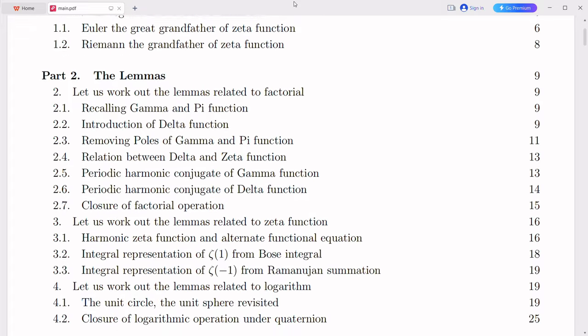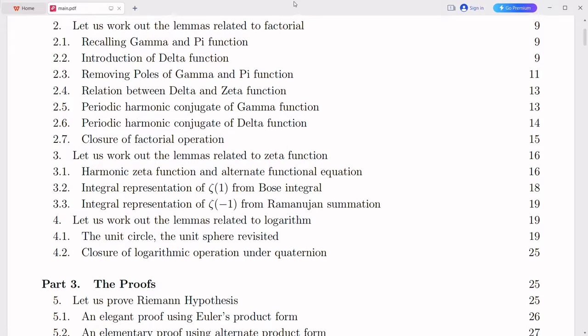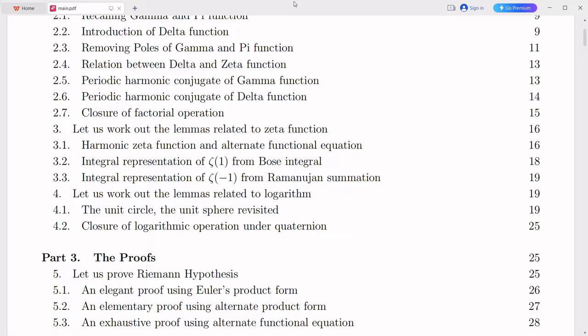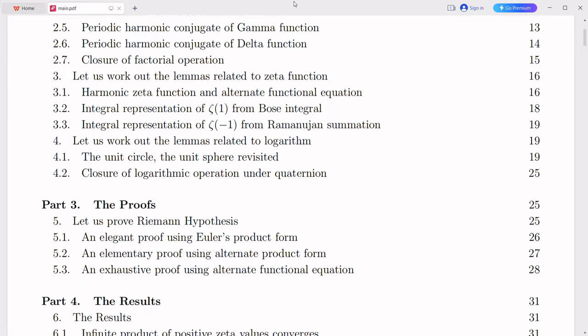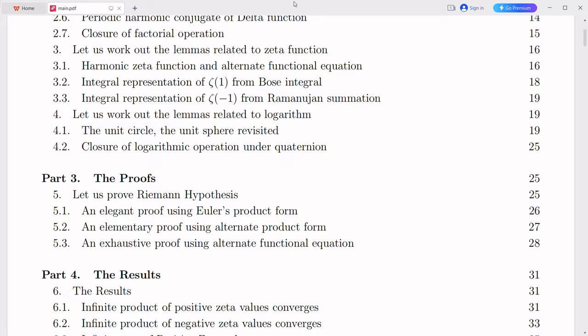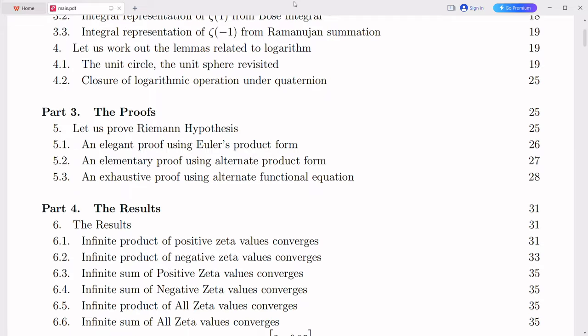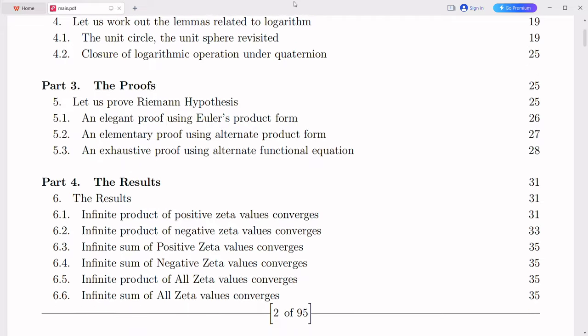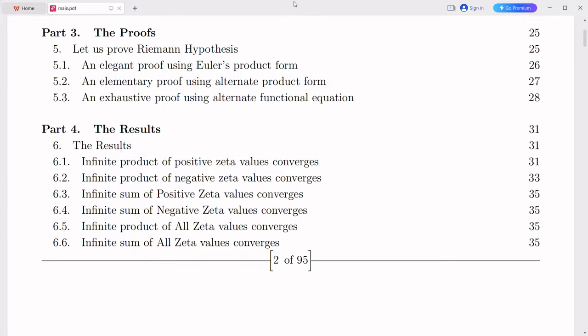The Riemann zeta function is a complex valued function defined for complex numbers s with a real part greater than 1. It is computed by summing the reciprocals of all positive integers raised to the power of minus s, starting from 1 and continuing infinitely. In other words, zeta(s) is expressed as the sum of 1^(-s) + 2^(-s) + 3^(-s) and so on, extending to infinity.